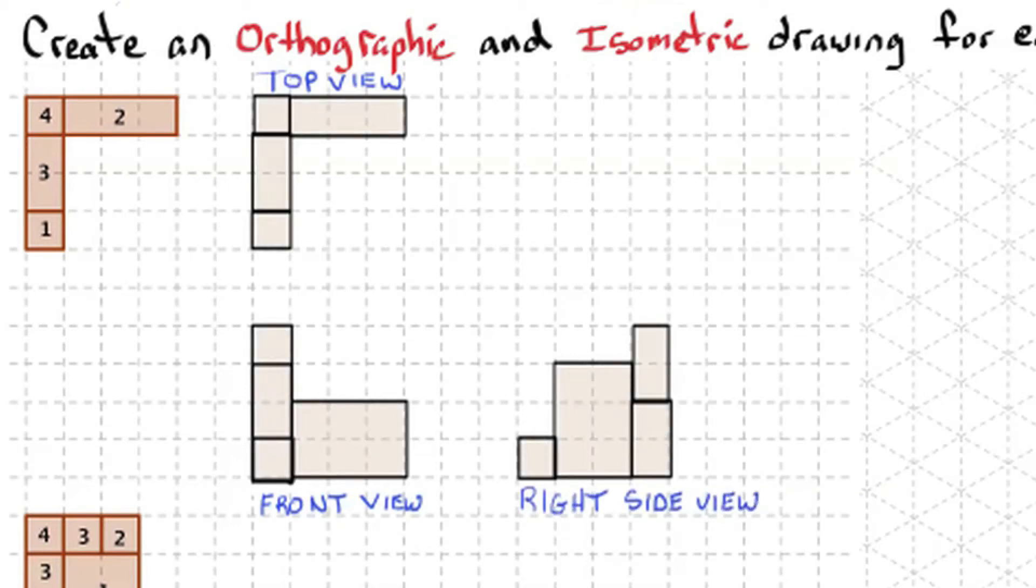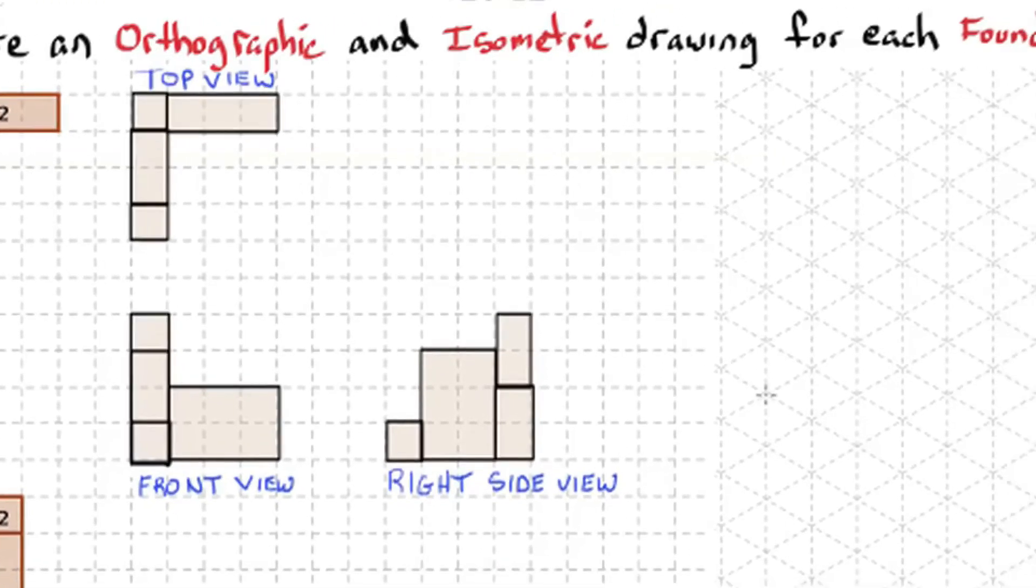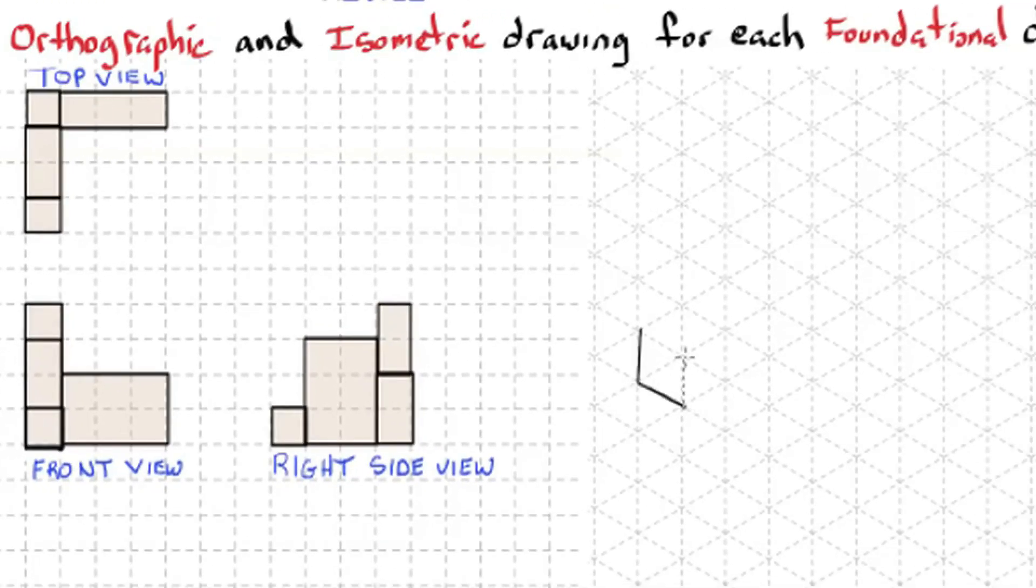So now let's take this and make the isometric drawing. So I'll start with the front, and I know there's a 1x1 cube.